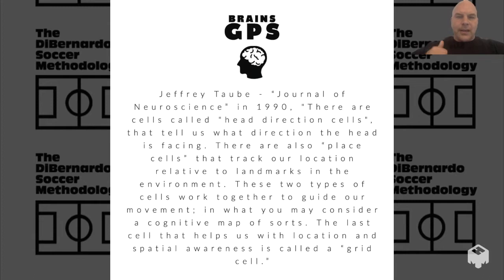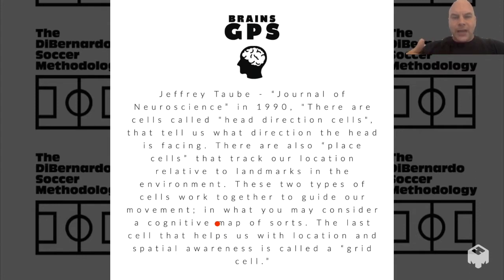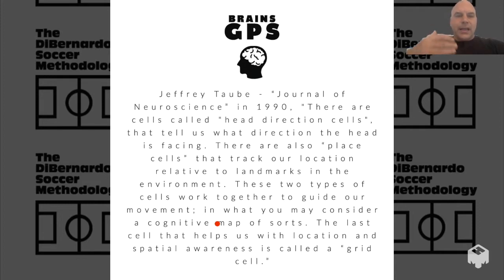Head directional cells tell us what direction our head is facing. Place cells keep track of our location relative to landmarks. The head directional cells and place cells work together to create a cognitive GPS map. The last cell type is called a grid cell, which is another map that lets us know where we are within that map — it's actually a grid in your brain.